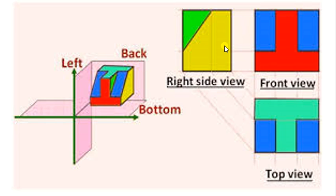This is the first angle projection method. In third angle projection, we draw the left hand side view on the left side itself. For first angle projection, just keep in mind: if we are drawing the right hand side view, draw it on the left side, and vice versa. If you are drawing the left hand side view, draw it on the right side of the front view.